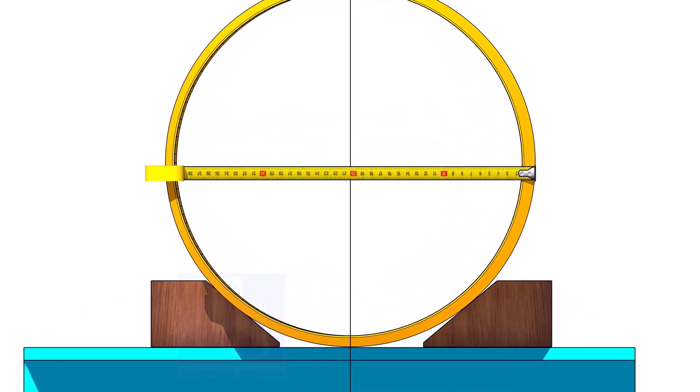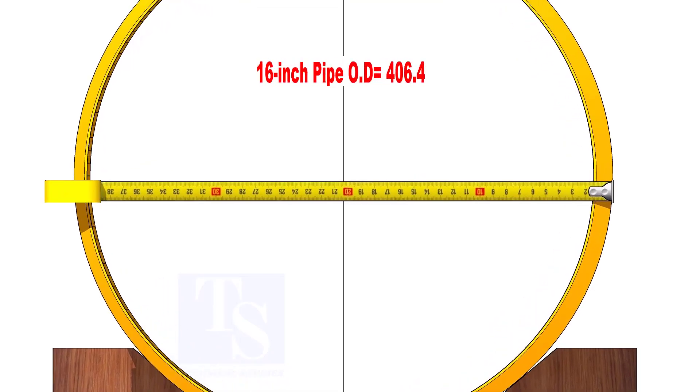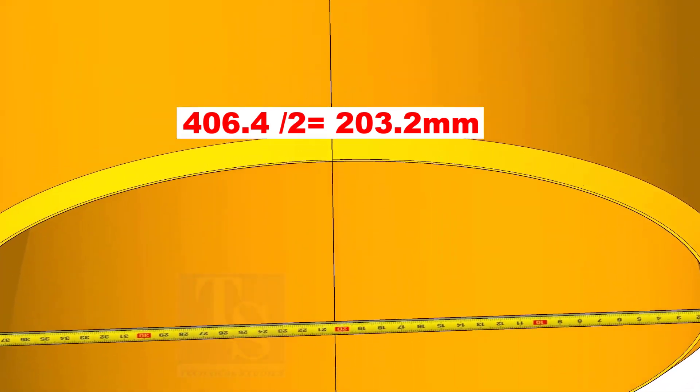This is a 16-inch pipe. OD of a 16-inch pipe is 406.4 millimeters. Mark the point where the half OD, 203.2 millimeters, reaches.